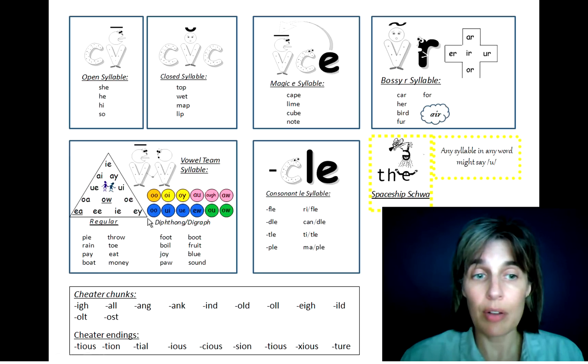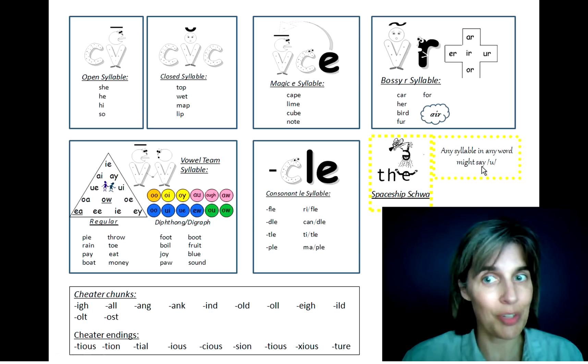The most complicated. We have our regular double vowels, where the first one does the talking and says its name, and diphthongs and digraphs. Consonant L-E. Schwa. Any syllable at any time might say schwa.